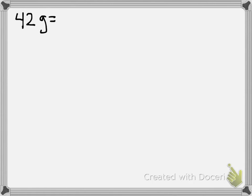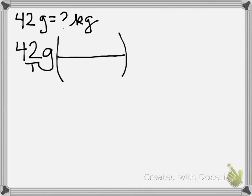Question number one asks: if you were converting 42 grams into kilograms, which fraction would you use as a converting factor? I'm going to start with my 42 grams — I can think of that as being over 1. Because grams is on top, it's going to go on the bottom. Grams go in the denominator, and kilograms go on the top. So my grams cancel out and I'm left with kilograms.